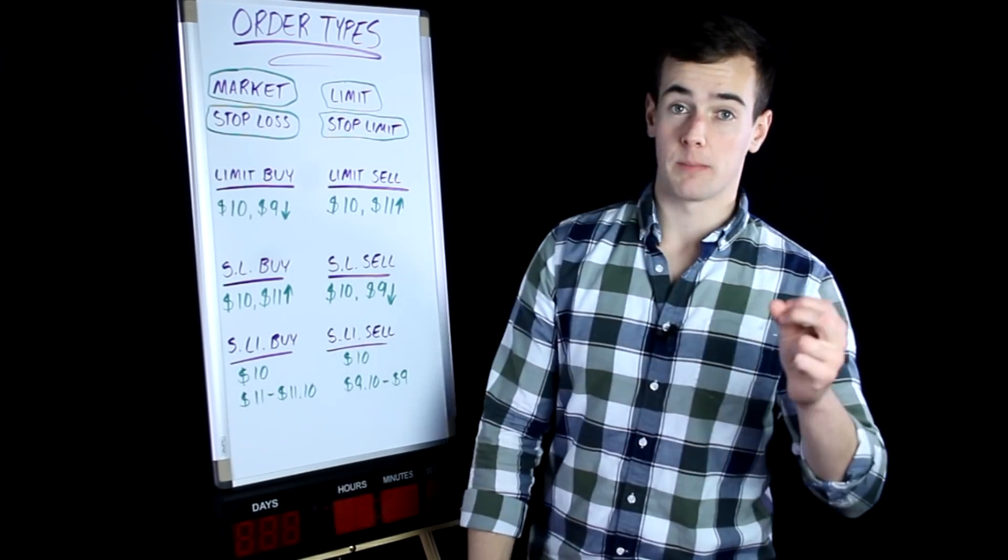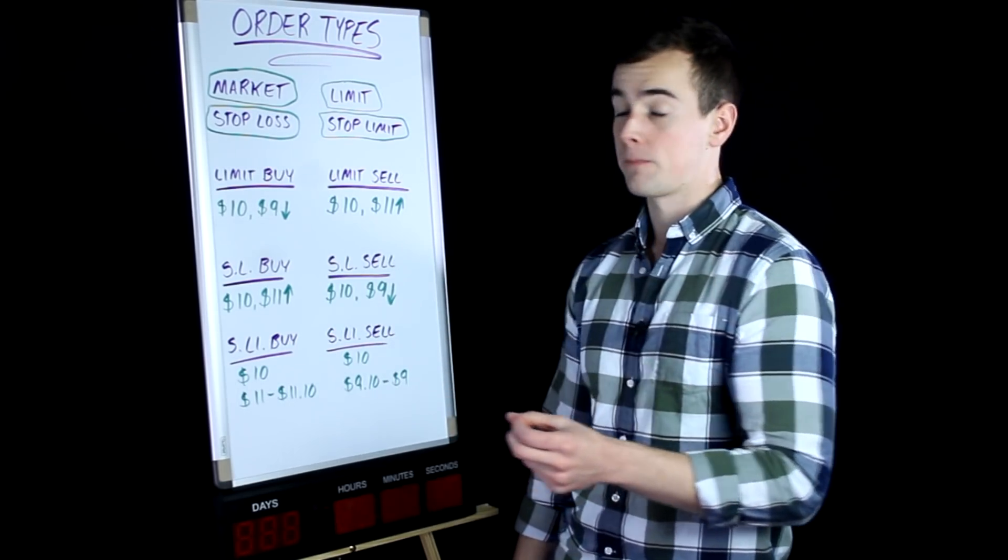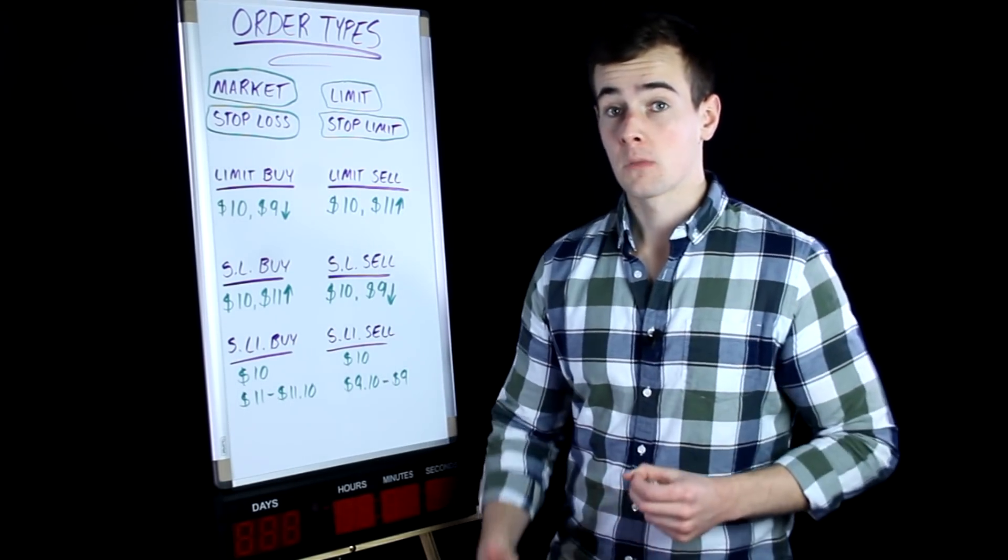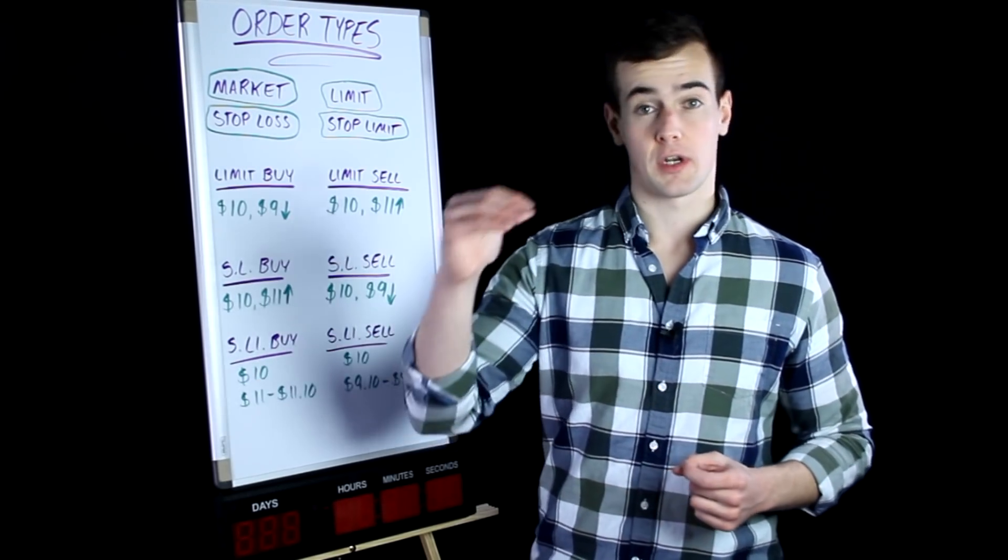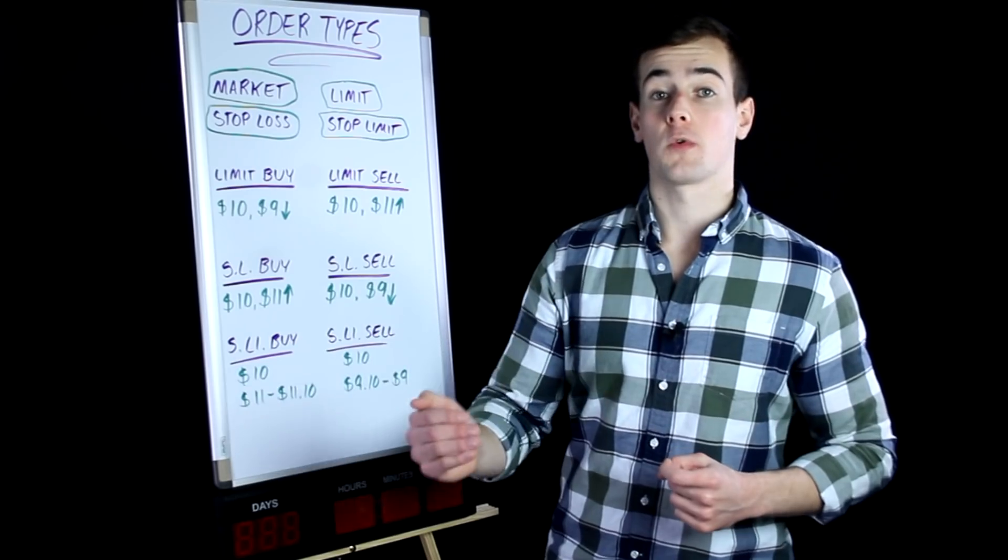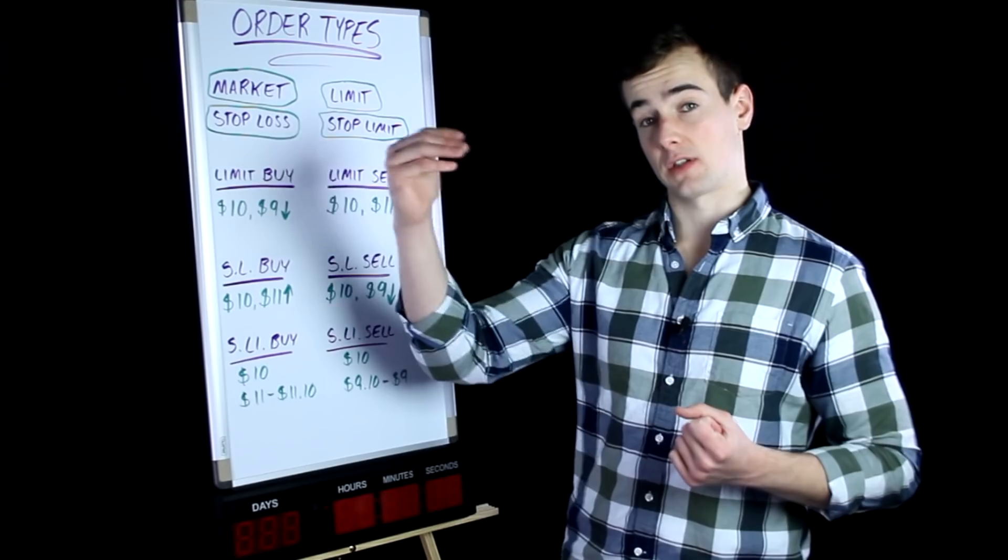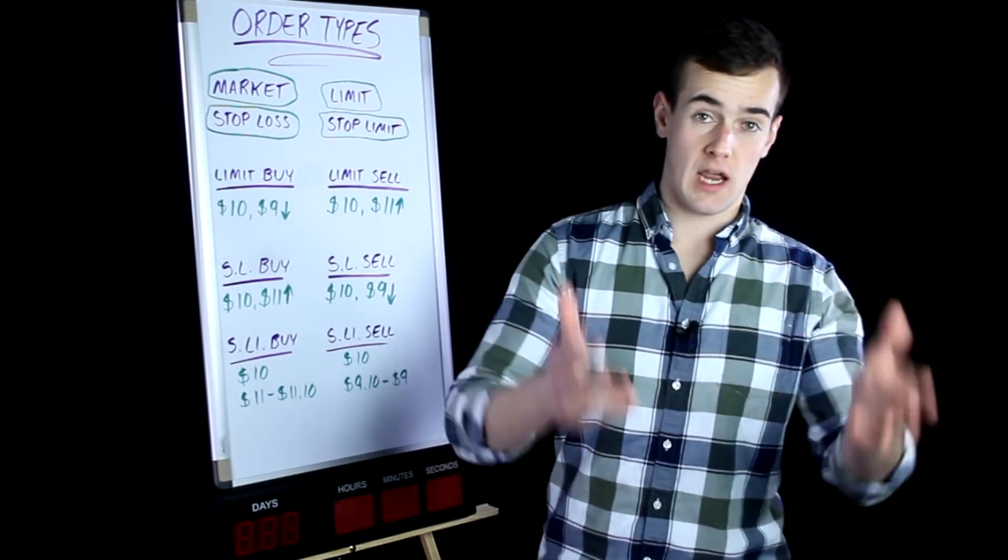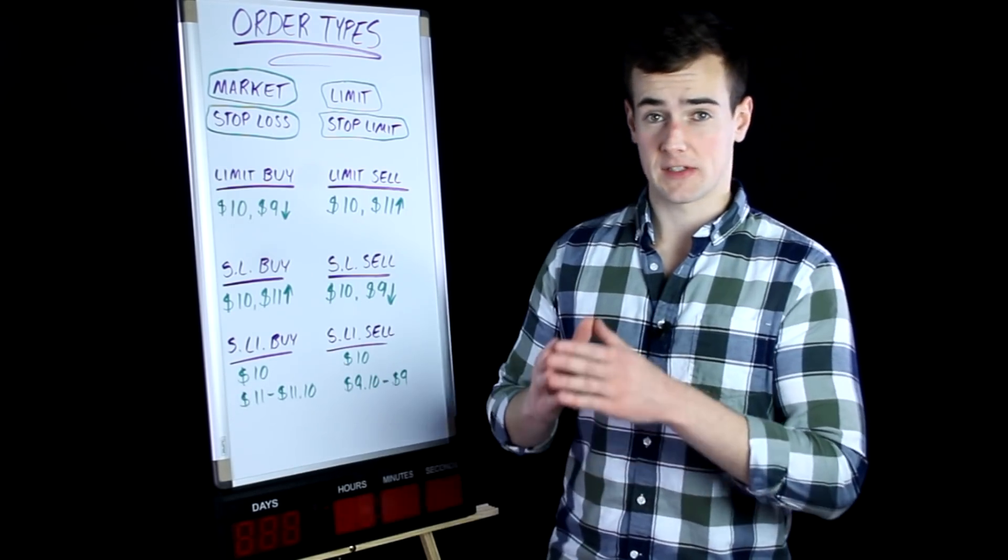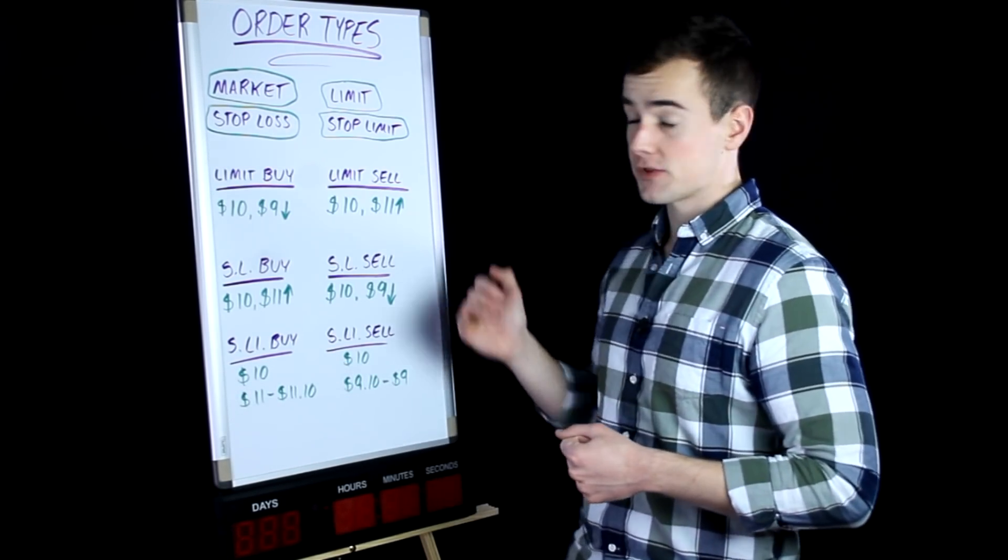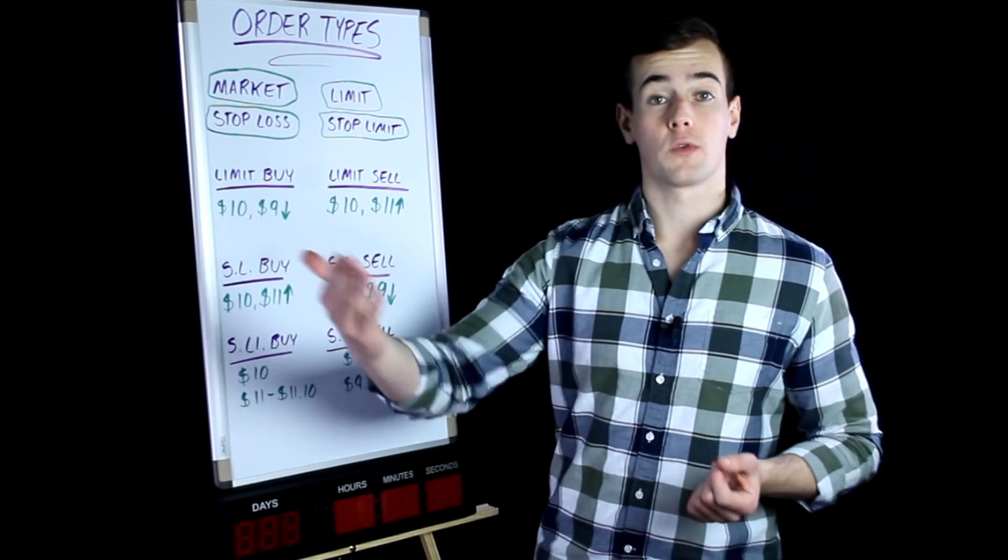But first of all, let's talk about the limit buy order. So a limit buy order would be if your stock was $10 a share and you wanted to buy it at $9 or below. So you would set a limit buy order at a price of $9 and if that stock fell to $9 or less, your order is going to be executed. Now a limit sell order is the exact same, but it's the opposite direction. So let's say the stock is $10 a share and you want to sell that stock for $11 or more, you would have a limit sell order with a price of $11. And if that stock goes above $11 or equal to $11, that order is going to be filled.